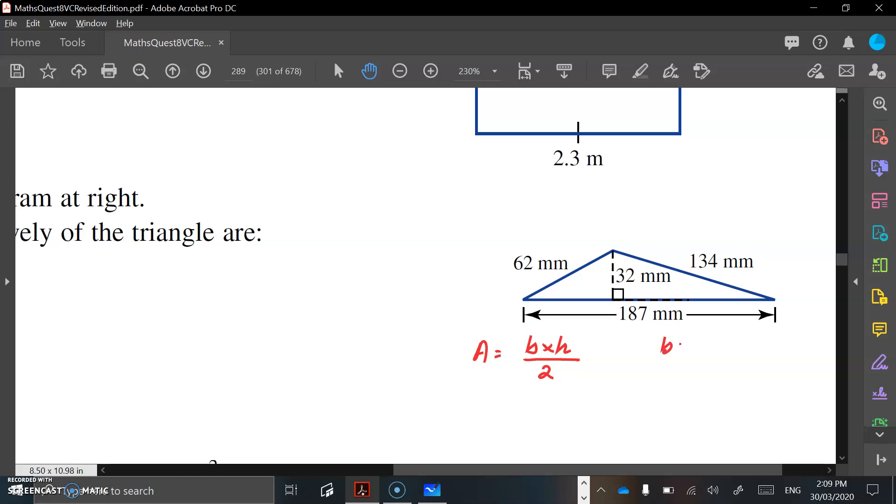So the base here is 187 millimeters, that's this length going right across. Your height is your vertical distance, so your height is 32 millimeters.